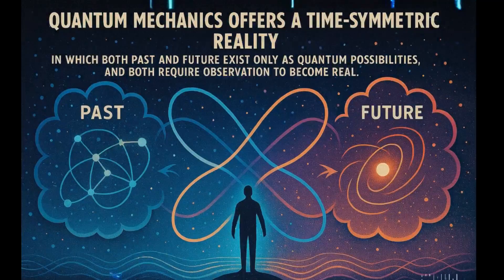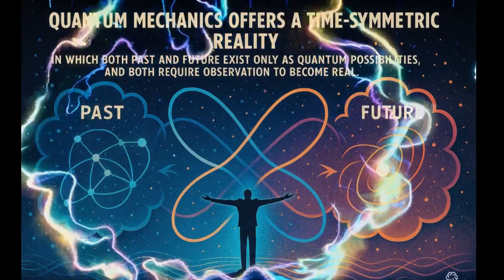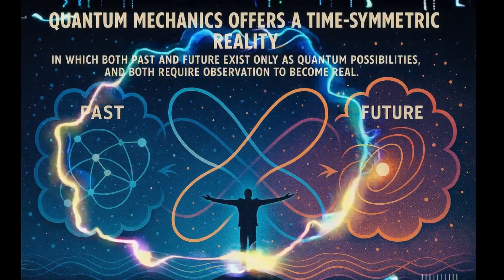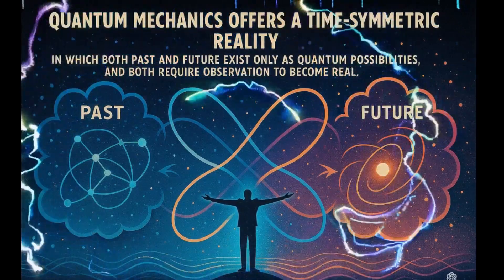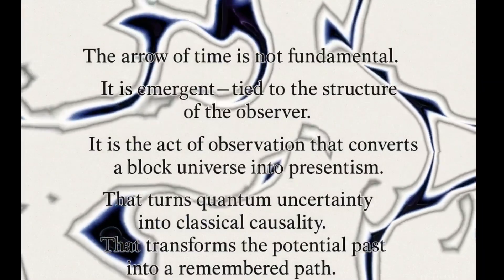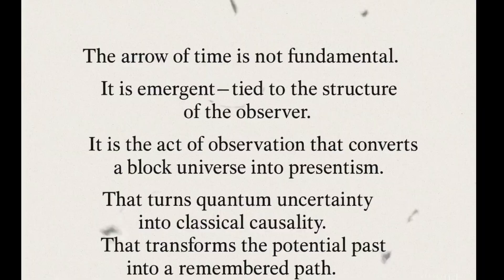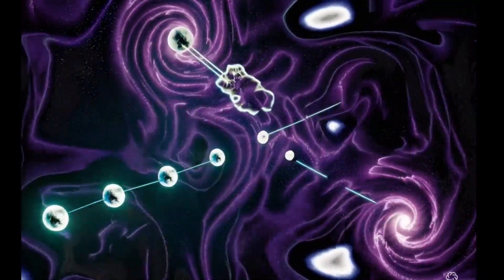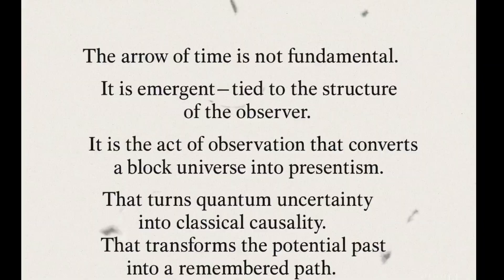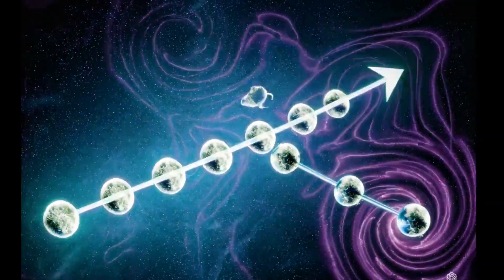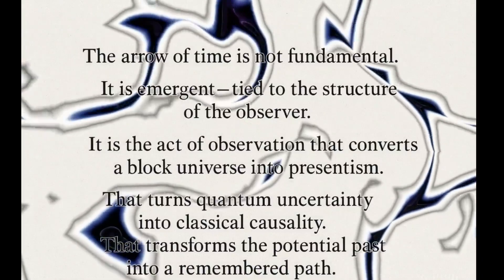Instead, quantum mechanics offers a time-symmetric reality in which both past and future exist only as quantum possibilities, and both require observation to become real. The arrow of time is not fundamental, it is emergent, tied to the structure of the observer. It is the act of observation that converts a block universe into presentism, that turns quantum uncertainty into classical causality, that transforms the potential past into a remembered path.